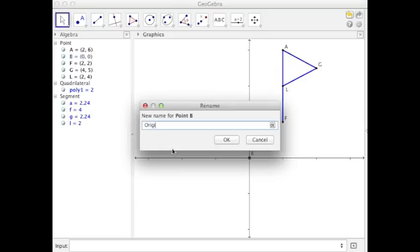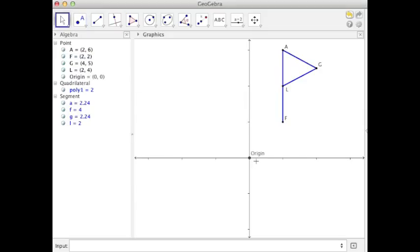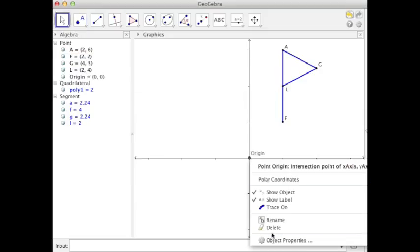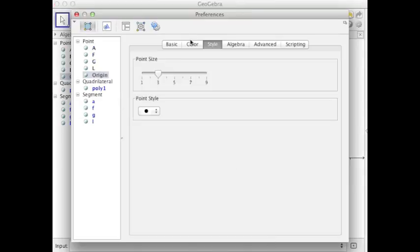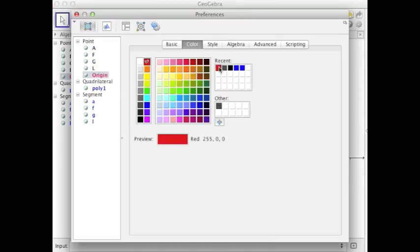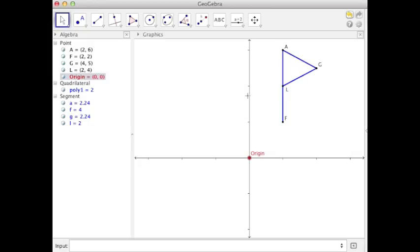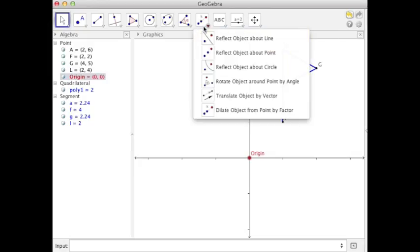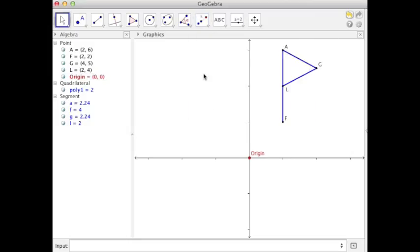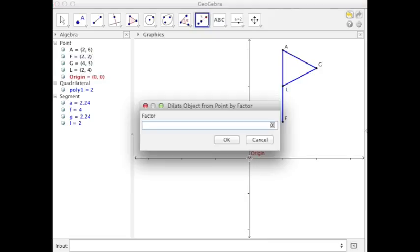and maybe I'll rename it, something descriptive. And maybe I'll change up its color as well. Give me a nice bright red. Alright, so there's a tool over here in the fourth toolbox called dilate object from point by factor. And so that's the tool we want to use. We're going to dilate, let's start with point F,